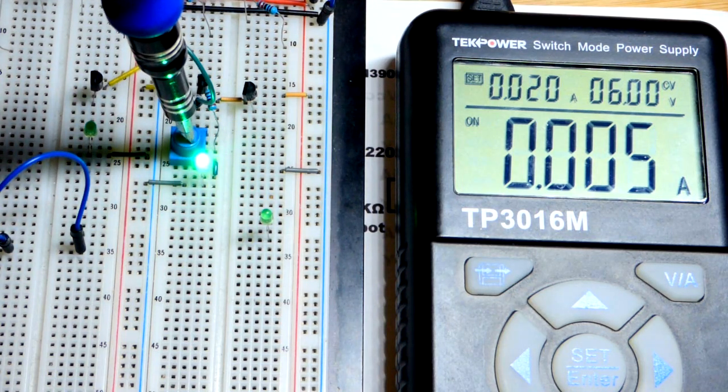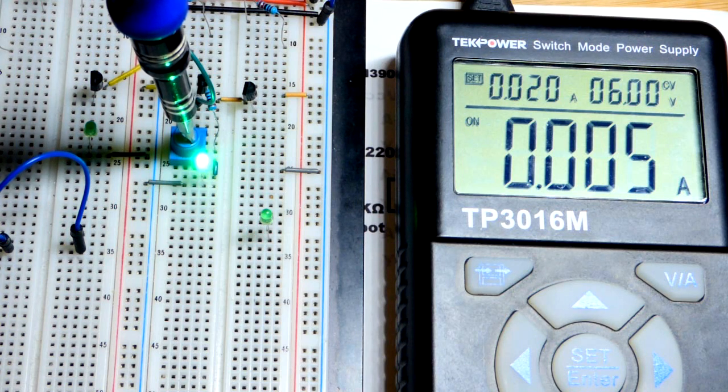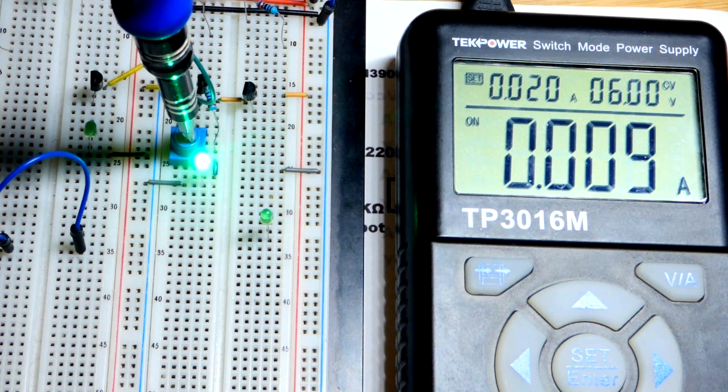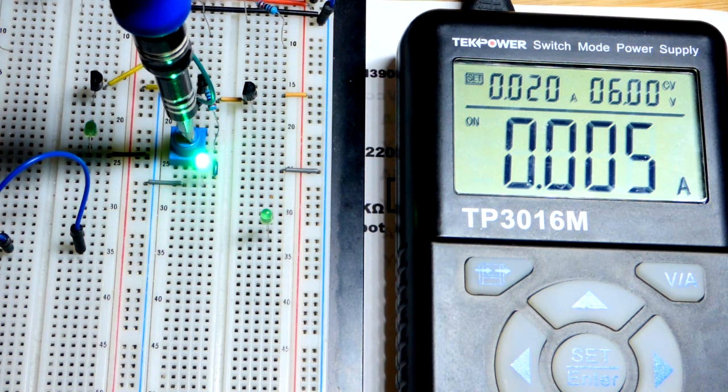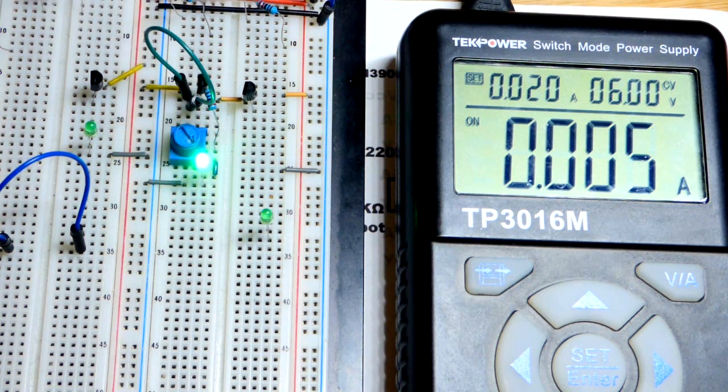And let's go to six. So since it's a 10 kilo ohm trim pot, I just have to turn it a little bit to change the current quite a bit. And five will work too.